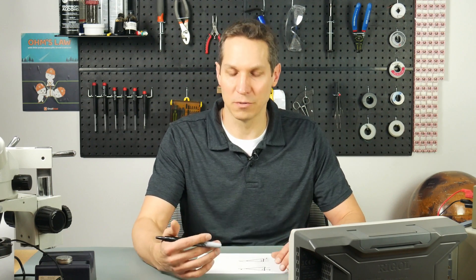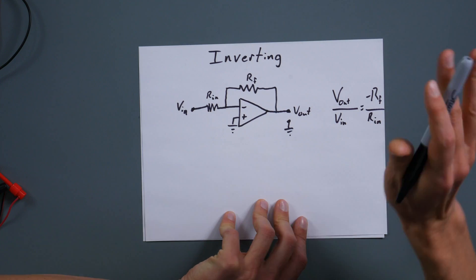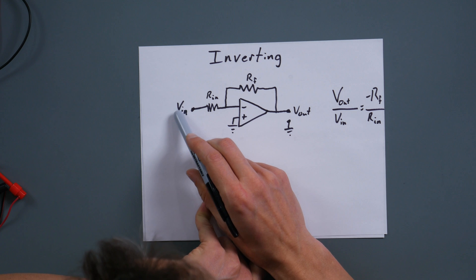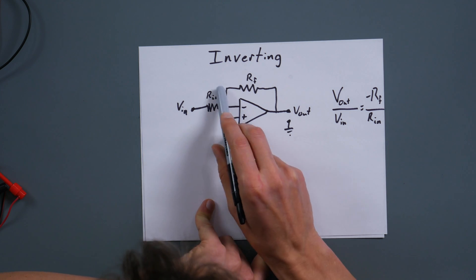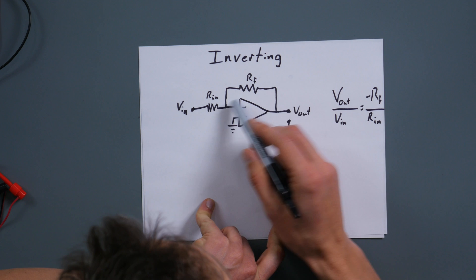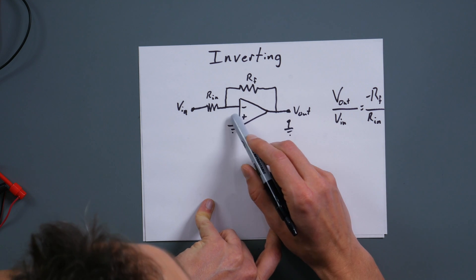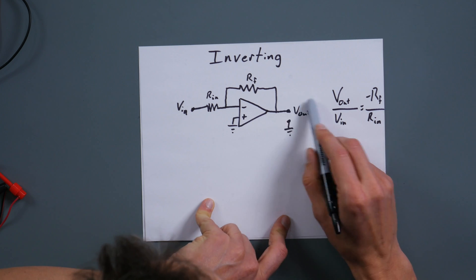Now strangely, well strangely at first, you get the inverting amplifier configuration much more often than you get the non-inverting. So we will start with that. Okay, so here we have the inverting op amp configuration, and we have our VIN going through RN, RF for feedback, and then the output, we have our non-inverting or positive input tied to ground. And then we just have our output here.